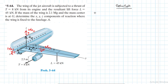Let's start with the translational forces. Summation of forces in the X direction equals zero. In the X direction we have A_x and the thrust force from the jet engine, which is positive at 8 kilonewtons. That's all we have in the X direction.